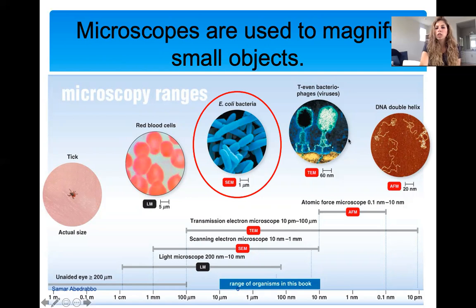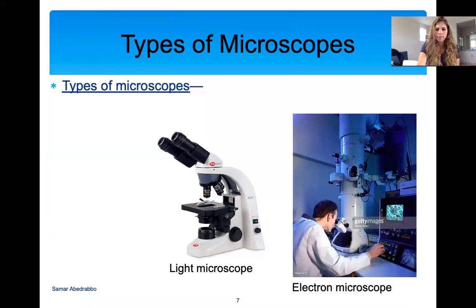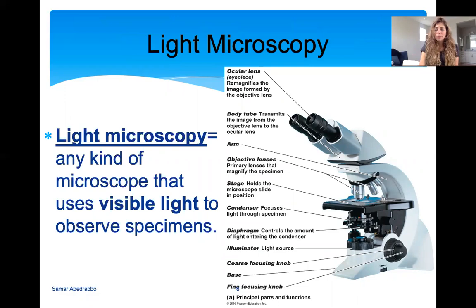When we get into smaller things, such as viruses or structures within cells — for example, ribosomes inside cells, which are very very small — that's when we need electron microscopes, which measure nanometer sizes. There are more types of microscopes, but the ones I want you to know are the light microscope and types of electron microscopes.